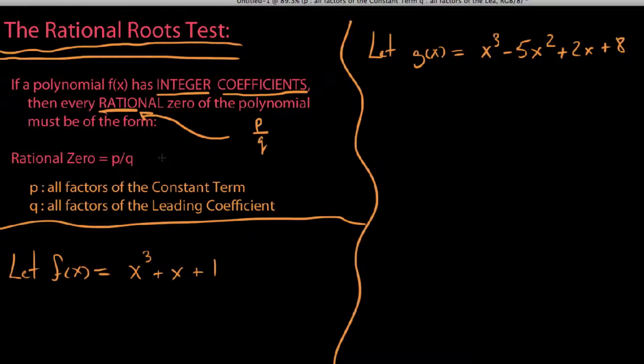If I gave you a polynomial, like you see, I've got listed two here. f(x) is, like x cubed plus x plus 1, or over here, g(x) is x cubed minus 5x squared plus 2x plus 8. Both of those have integer coefficients, and so it is the case that every rational zero or possible potential rational zero of these things has to be of the form p over q.